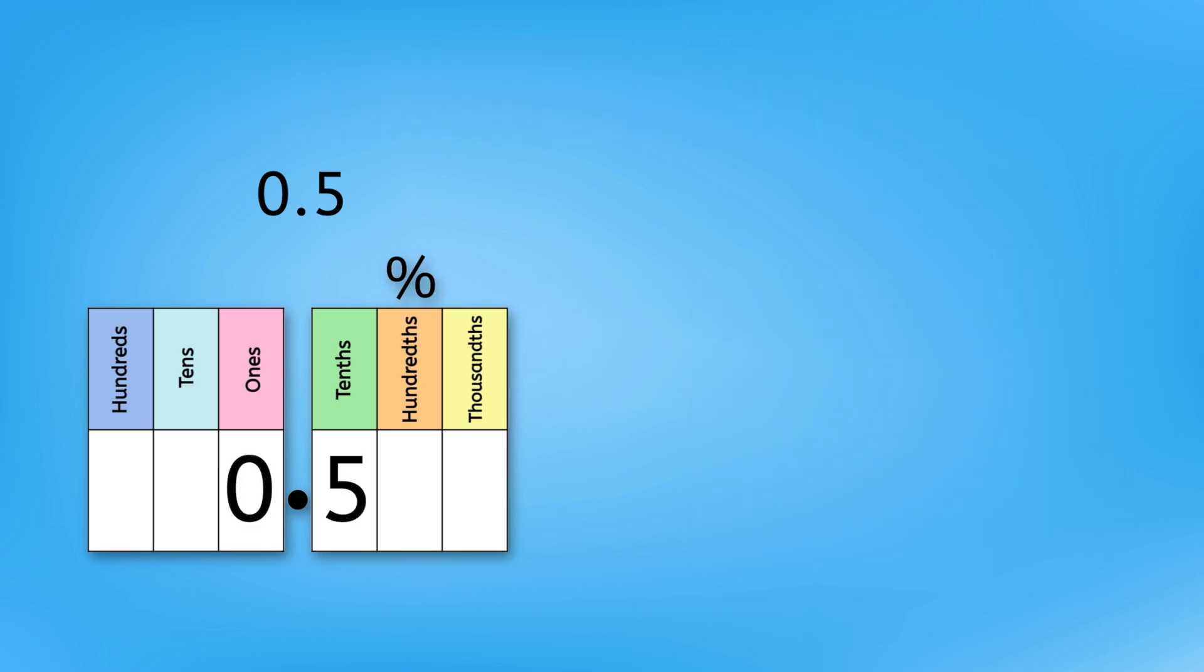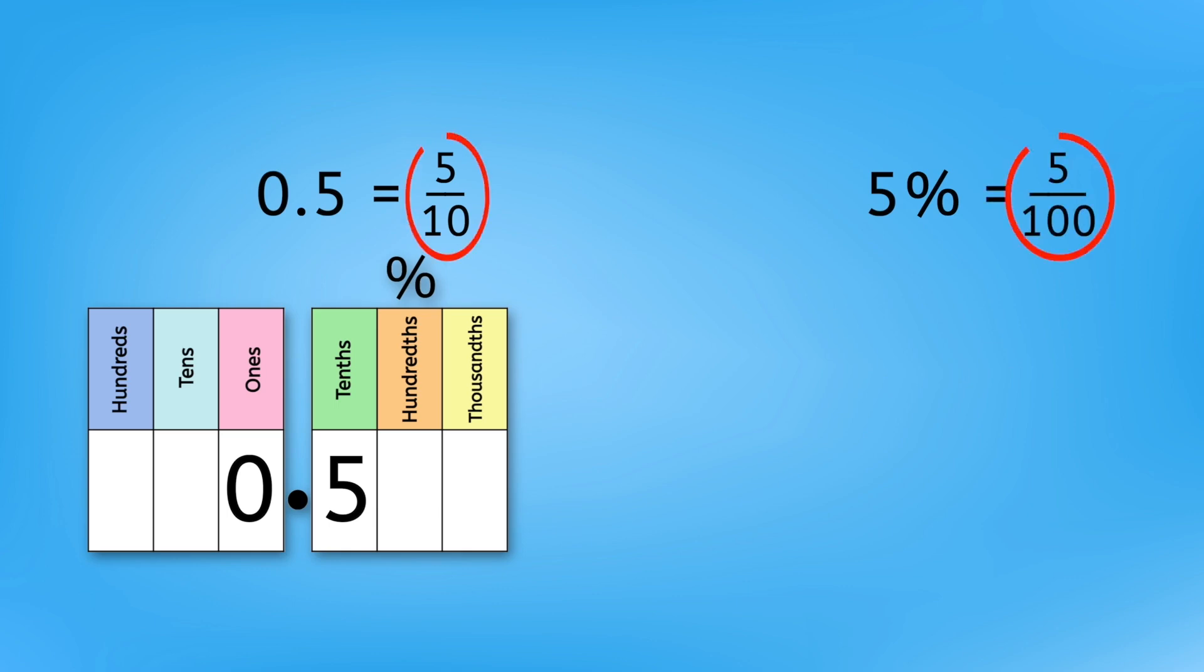If we write five tenths in the chart, there's no digit in the hundredth place. So does that mean it's five percent? This decimal is five tenths, which in fraction form is five tenths. Five percent means five out of a hundred, or the fraction five hundredths. So we must be missing something.